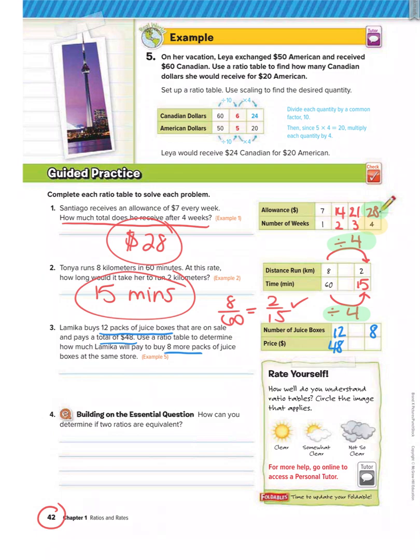So if you notice, we can't go from 12 to 8 using multiplication or division. So when this happens, what we have to do is simplify 12/48 first. So if we simplify 12/48, we get 1/4. And then from the 1/4, we can go to the 8.